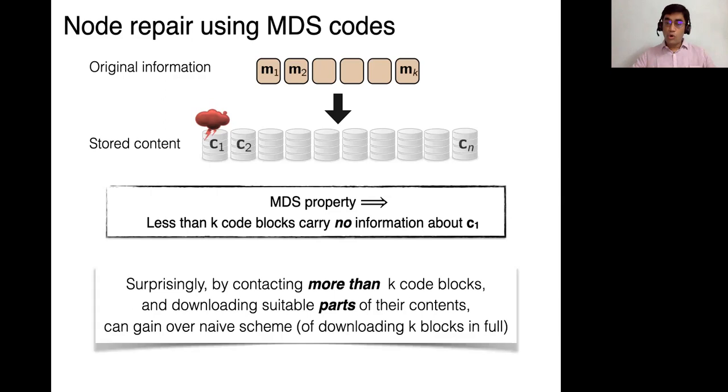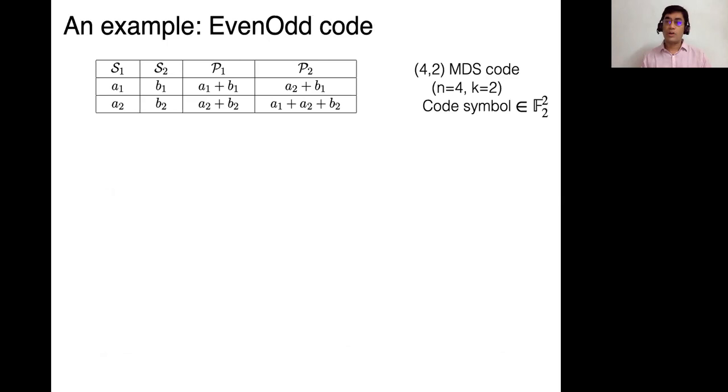So surprisingly, if you contact more than K code blocks, and you download not them in entirety, but some parts of them, then you can gain over this naive scheme, which will simply download K code blocks in full and recover C1. And in fact, it also allows you to recover the entire set C1 through Cn, which is clearly wasteful. And how might you do this? This is somewhat surprising and counterintuitive. And a good illustration of this is a simple code called the even odd code.